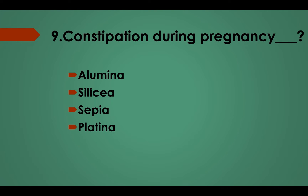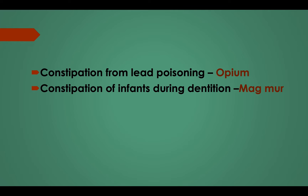Question No. 9: Constipation during pregnancy — Option A, Alumina; Option B, Silicea; Option C, Sepia; Option D, Platina. Answer: Option A, Alumina. Constipation from lead poisoning: Opium. Constipation of infants during dentition: Magnesia muriatica.